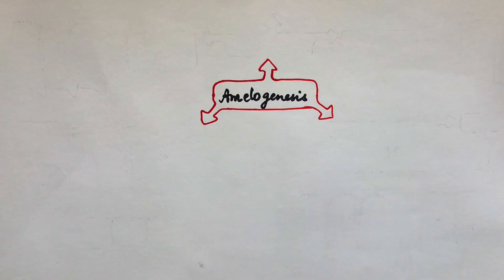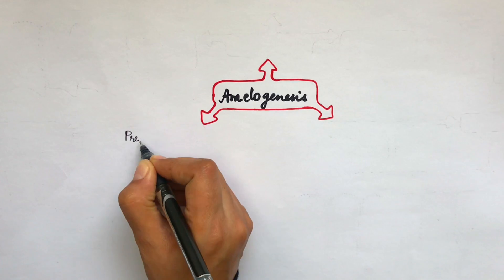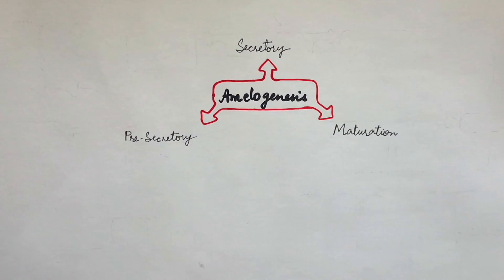Amelogenesis is divided into three main functional stages: the pre-secretory, the secretory, and the maturation stage.